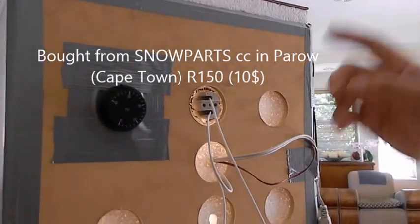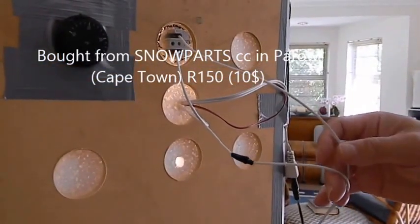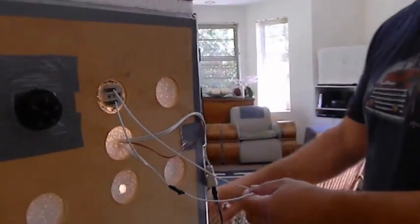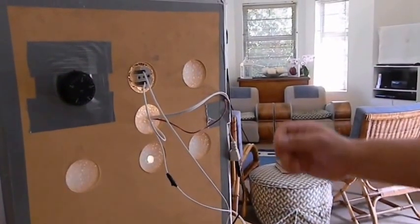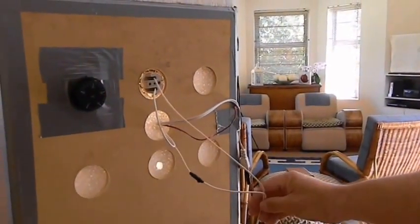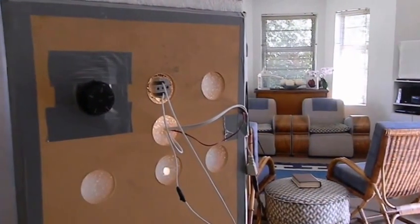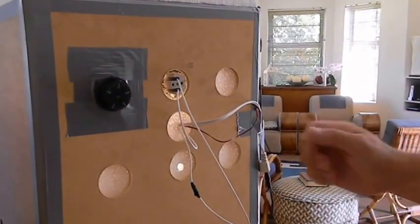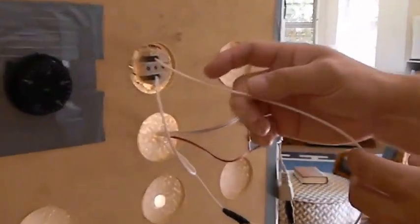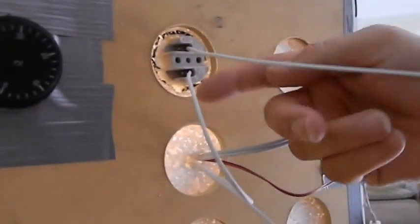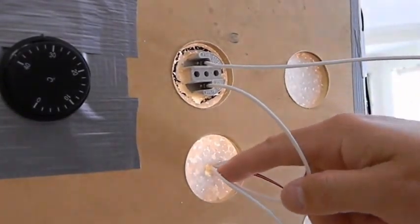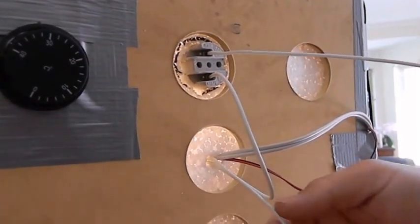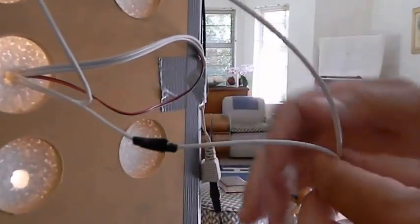The power source for the light bulb is 220 volt from our wall socket. We live in South Africa so we've got 220 volt. Those living in America will have 110 volt. The thermostat is essentially a switch. So you can see that the 220 volt will come into the light bulb, it will leave the light bulb, it then basically goes to the thermostat, it returns and exits the incubator here and goes back to the 220 volt power supply.